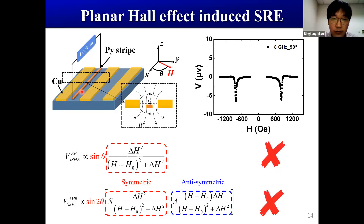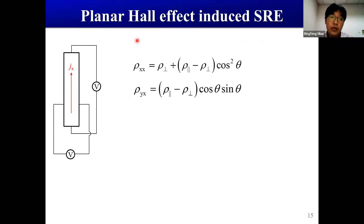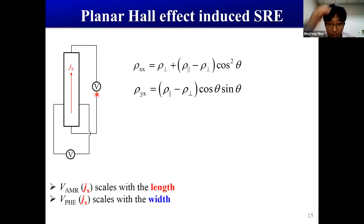We attribute this signal to the transverse induction current along the y-direction. In addition to the z-direction microwave magnetic field H_z, there is also an in-plane electric field along the y-direction. Due to Ohm's law, we have a y-direction induction current. This y-direction current produces a planar Hall effect voltage along the x-direction along the stripe. Traditionally in Hall measurements, we have one current source and two voltage meters, where AMR scales with length while the planar Hall effect scales with width.